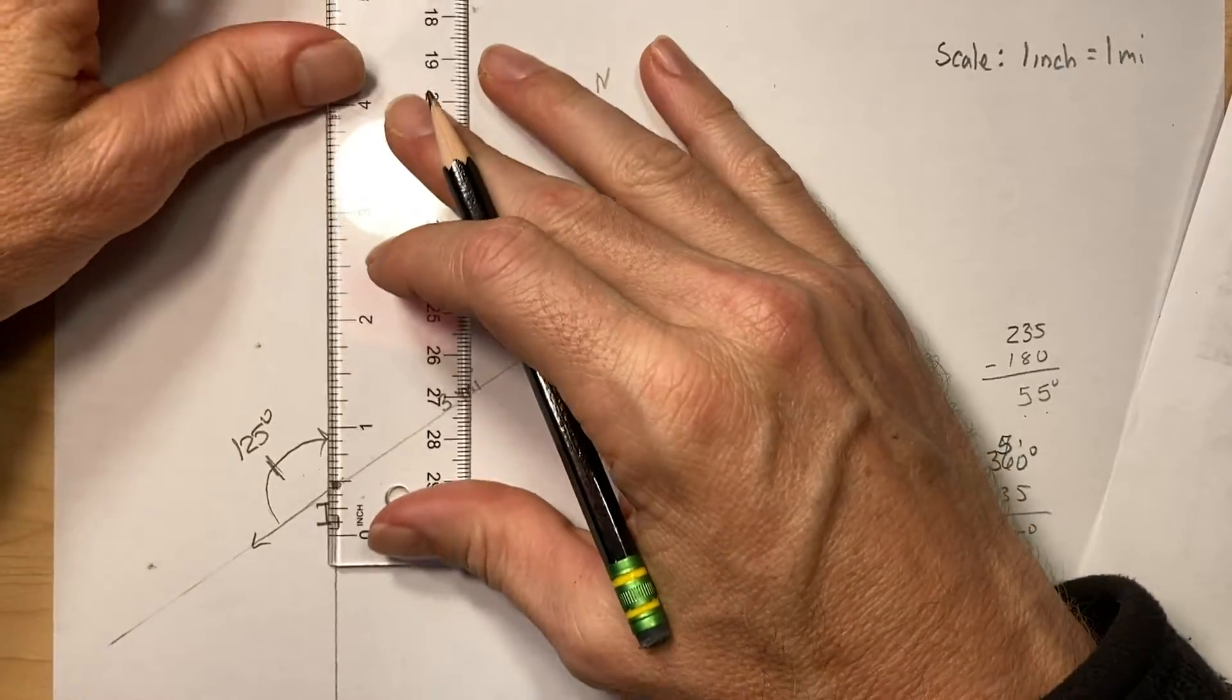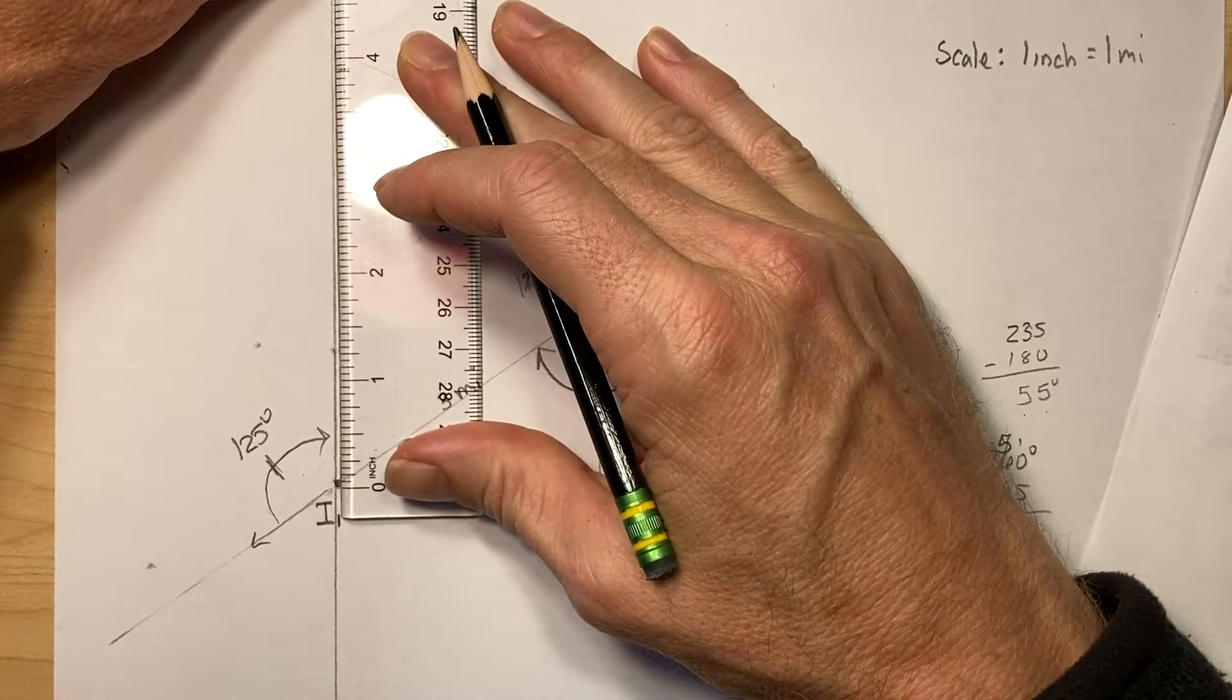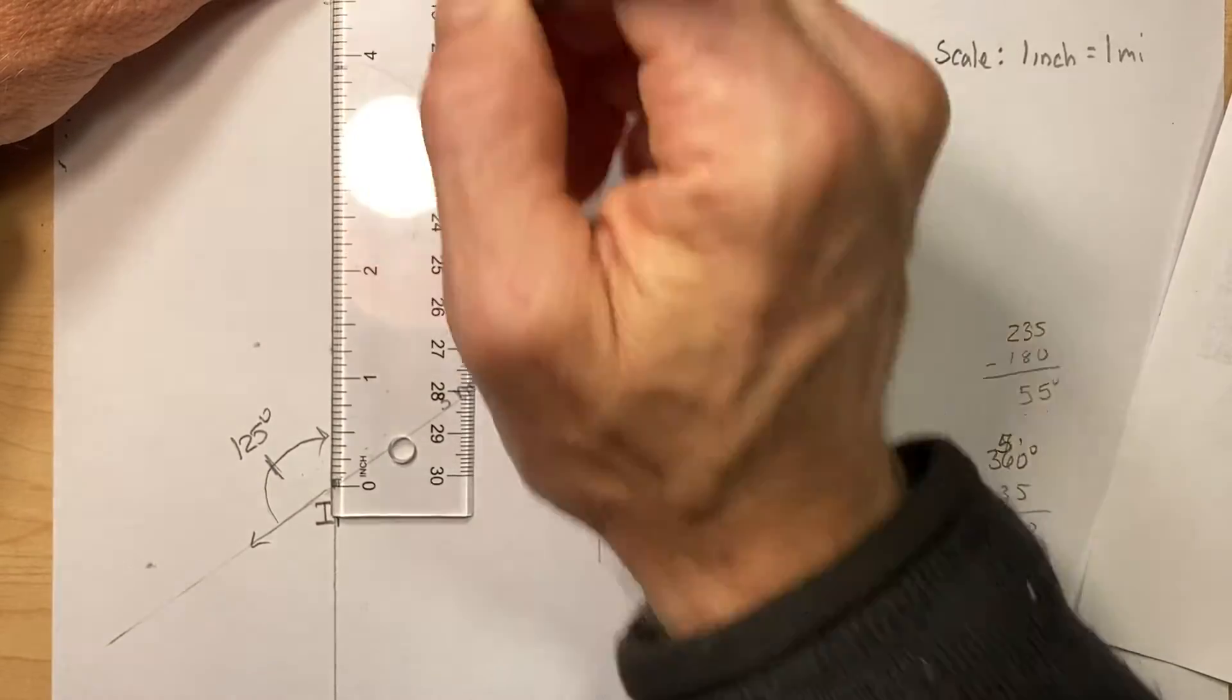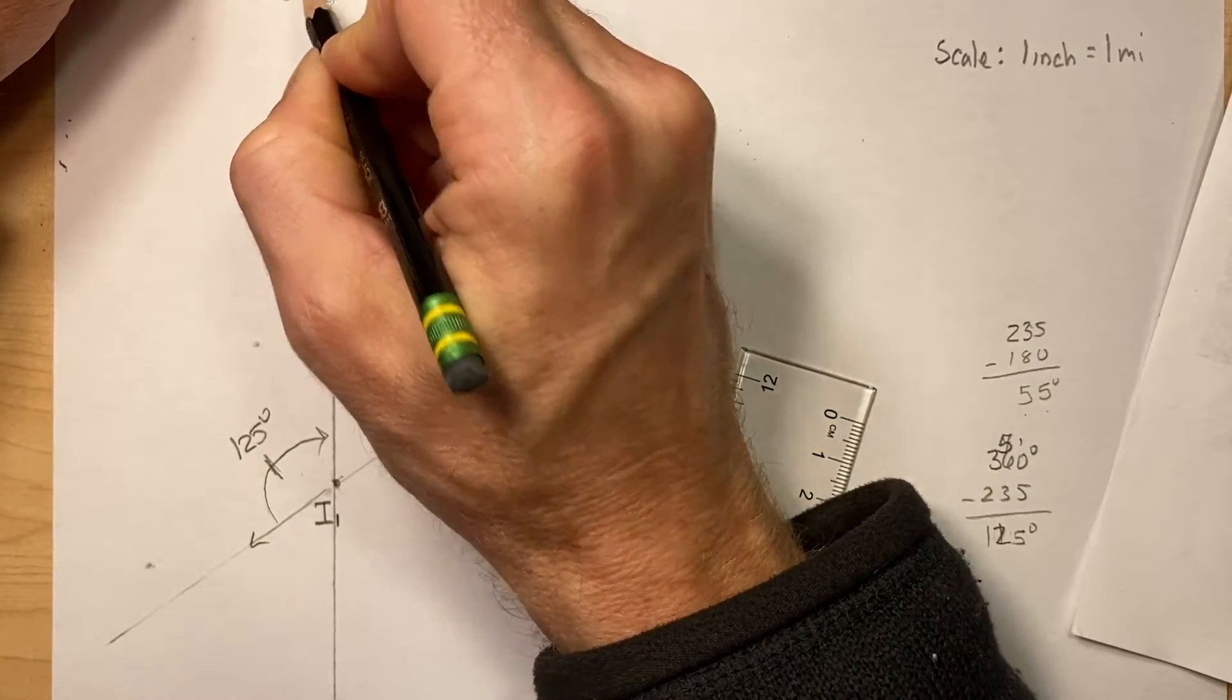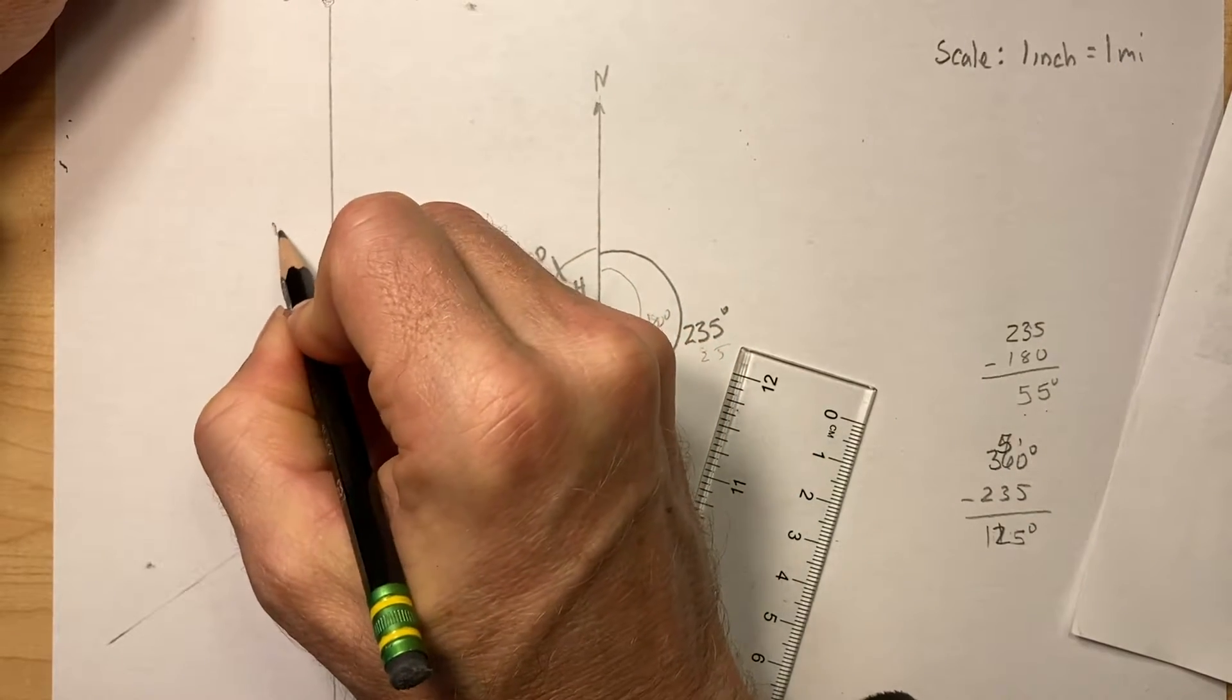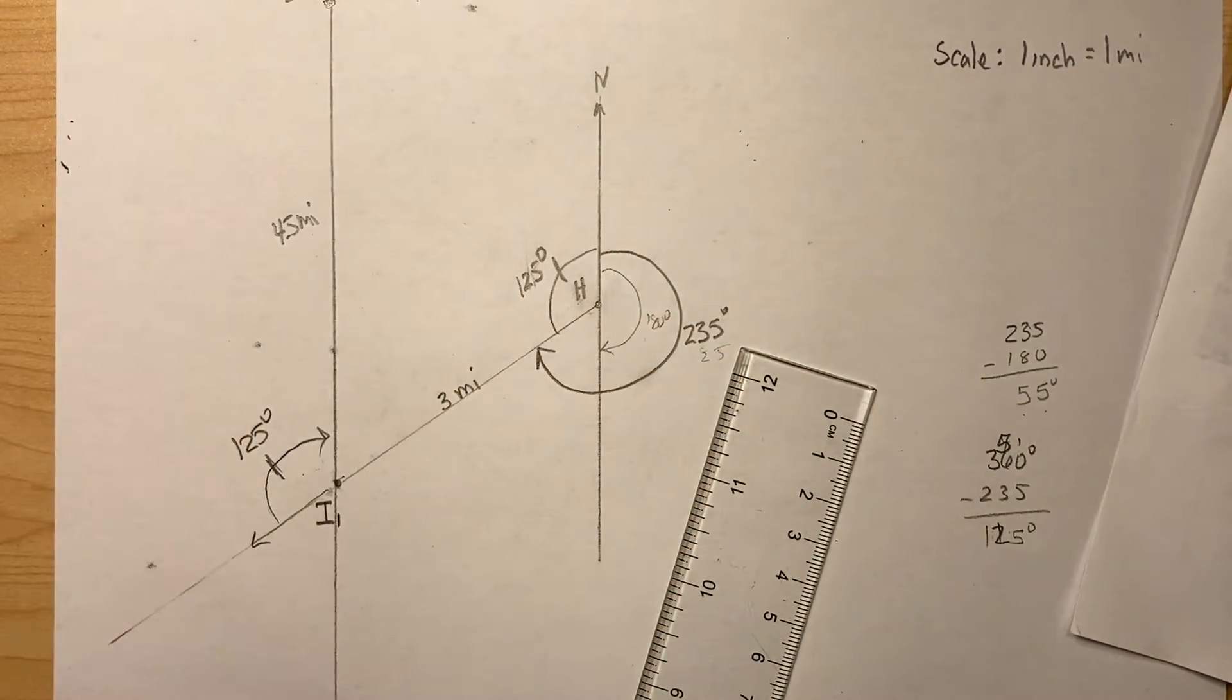I ran out of room because my light's in the way. Let's push it up a little bit. Four and a half miles. It's four and a half inches right here. And here's our point. And this is I2. And this is 4.5 miles.